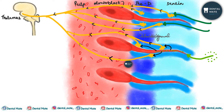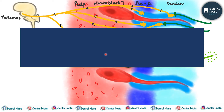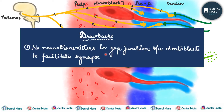From the inner dentine to the thalamus, it is perceived as dentinal hypersensitivity. This theory is also not popular because, although odontoblasts are derived from neural crest cells and retain the ability to transmit and propagate impulses, there are no neurotransmitters present in the gap junction between odontoblasts to facilitate the synapse. The odontoblasts may modify the local ionic environment and alter the threshold of the intradentinal nerves.